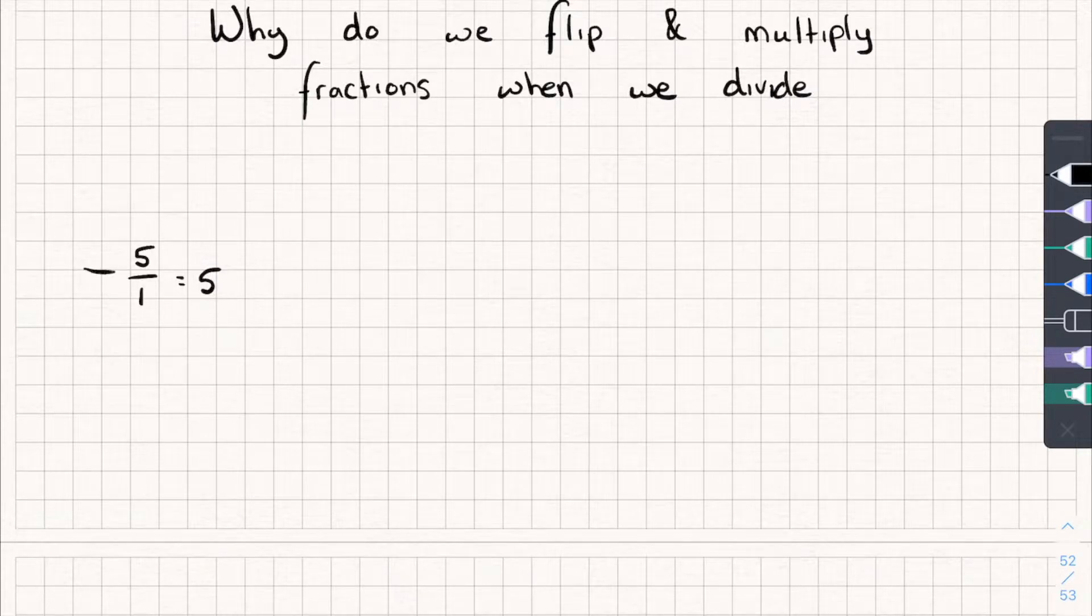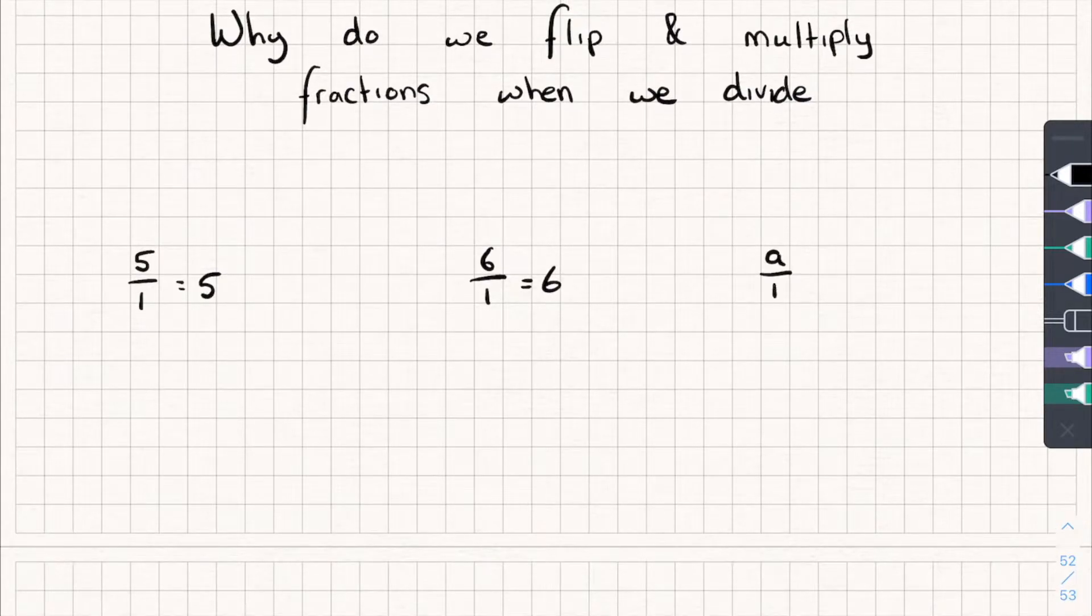The reason for this is because this line in a fraction just means divided by. So if I've got five things, I divide them, I share them out between one person, they're going to get five things. And this works no matter what numbers we use, so six over one is equal to six, or a over one is equal to a.